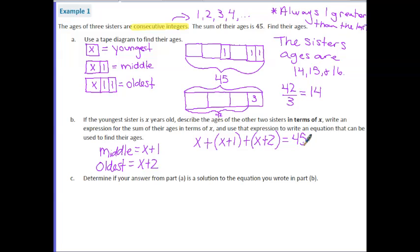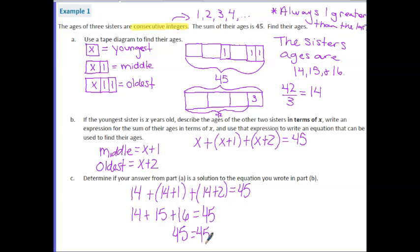Part C says, determine if your answer from part A is a solution to the equation you wrote in part B. So they're telling us to take our answer from part A and plug it in for part B. Now we found that a single x was equivalent to 14. So I'm going to replace each of the x's with 14 and evaluate. So we can simplify here. This would be 14 + 15 + 16. And I know that 14 + 15 + 16 is 45. So we know that our answer from part A was correct. And our equation from part B is also correct because it works for the ages that we found in part A.